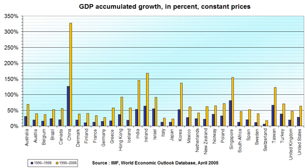The economic growth rate is calculated from data on GDP estimated by countries' statistical agencies. The rate of growth of GDP per capita is calculated from data on GDP and people for the initial and final periods included in the analysis.